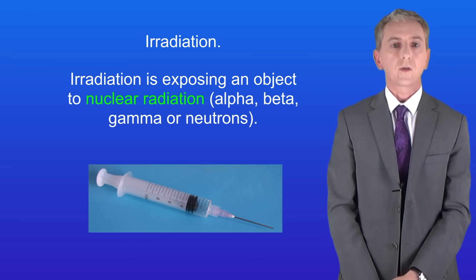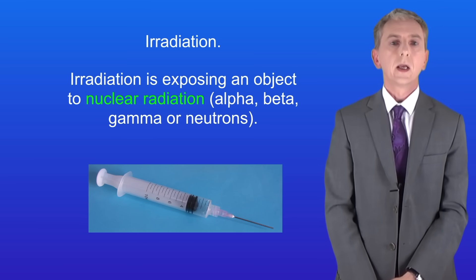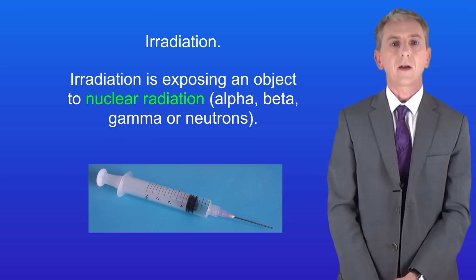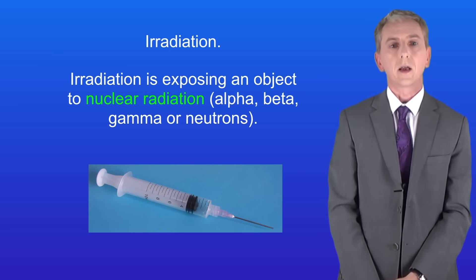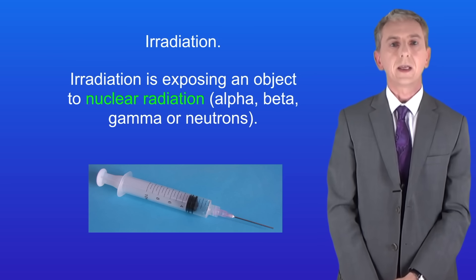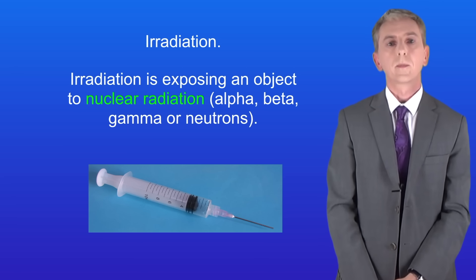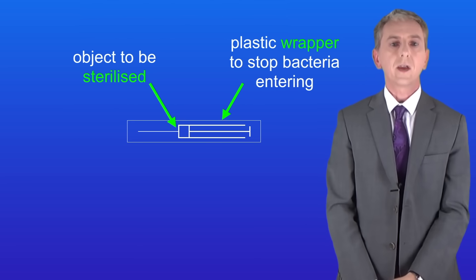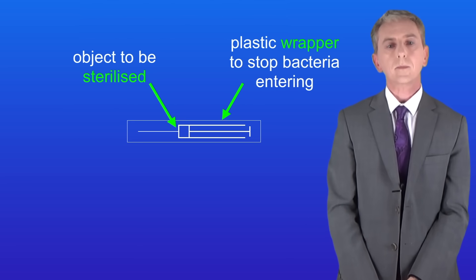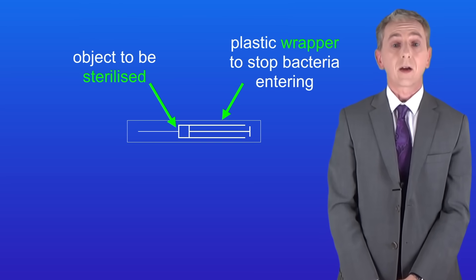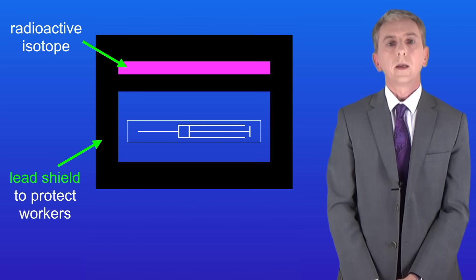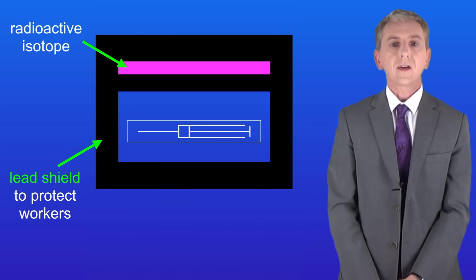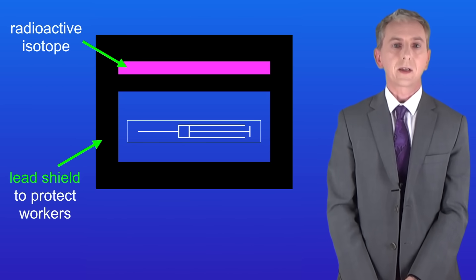A good example of irradiation is sterilization — in other words to kill bacteria. Lots of medical equipment needs to be sterilized and in many cases this is done by heating. But some objects cannot be heated, so for these we use gamma radiation produced from a radioactive isotope. Here's the object to be sterilized — in this case it's a syringe. We've placed this inside a sealed plastic wrapper to stop bacteria entering after we sterilize the object. We then place the object near a radioactive isotope that emits gamma radiation, inside a lead shield to protect workers from the radiation.